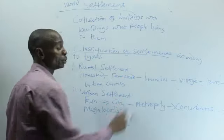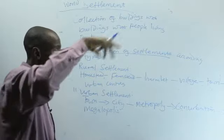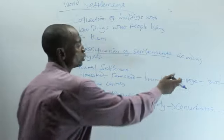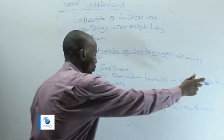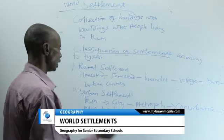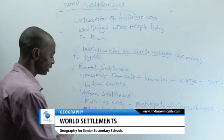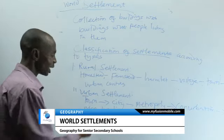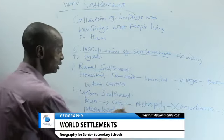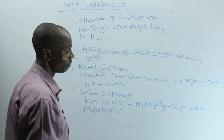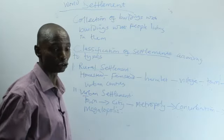From there, it graduates to hamlet, where you have maybe four or five houses, separated and scattered. Then it moves to a village, where we have a population less than 100. Then it graduates to town and probably to urban centers. Urban settlement starts from town to city, city to metropolis. Metropolis is a type of settlement where you have two cities growing together.